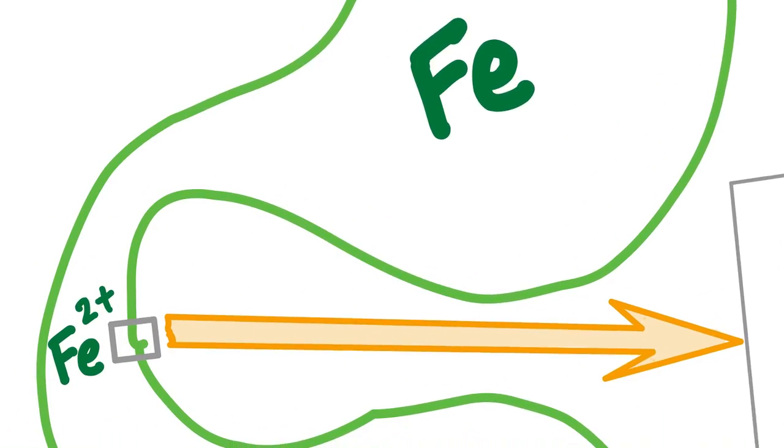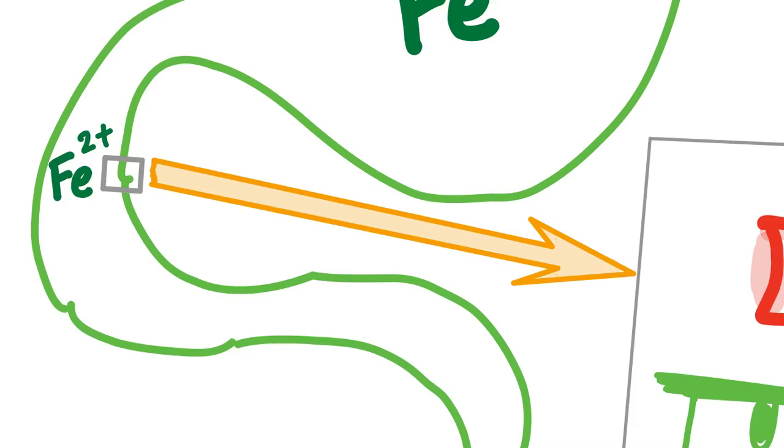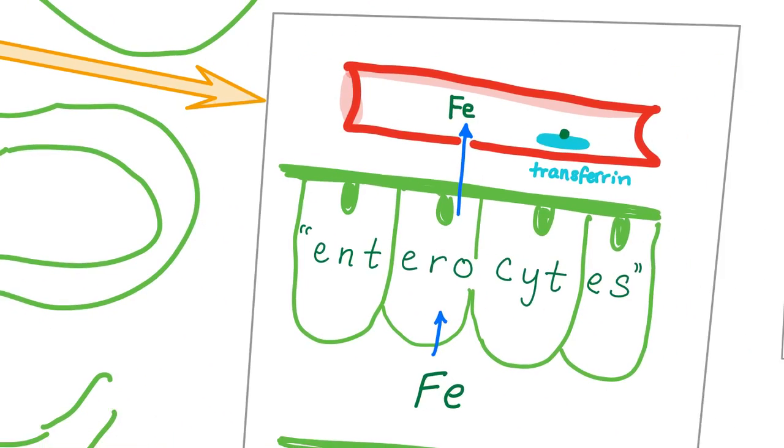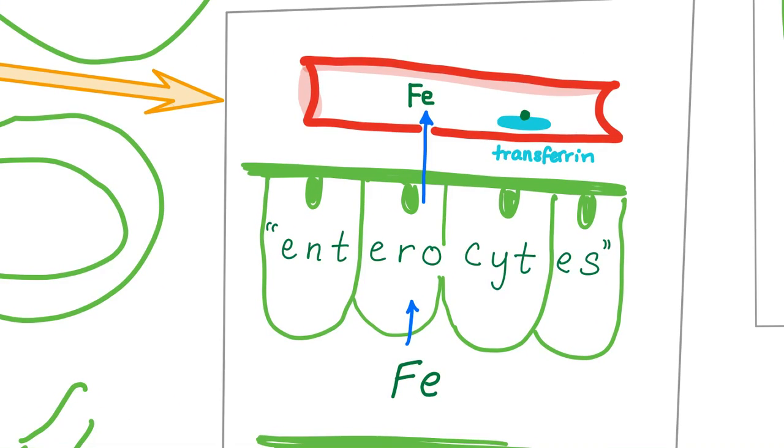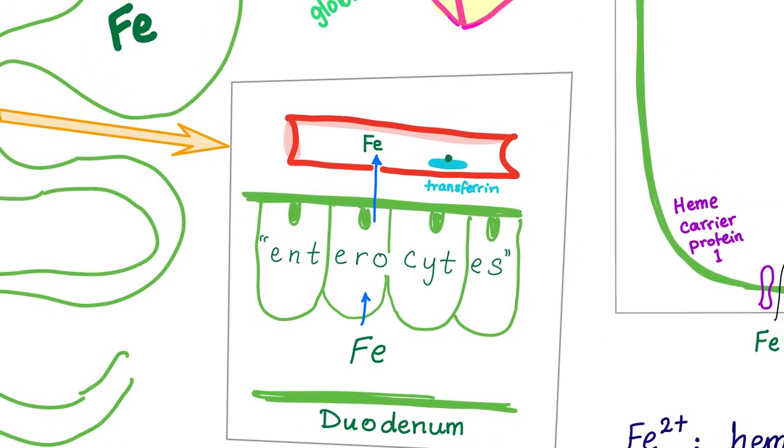That's fine. So what will happen to this ferrous iron? It will go into the duodenum, pass through the enterocytes, the cells that line the duodenum from inside to the bloodstream. And in the bloodstream, it will bind to transferrin, the carrier protein for iron. That's the short story.